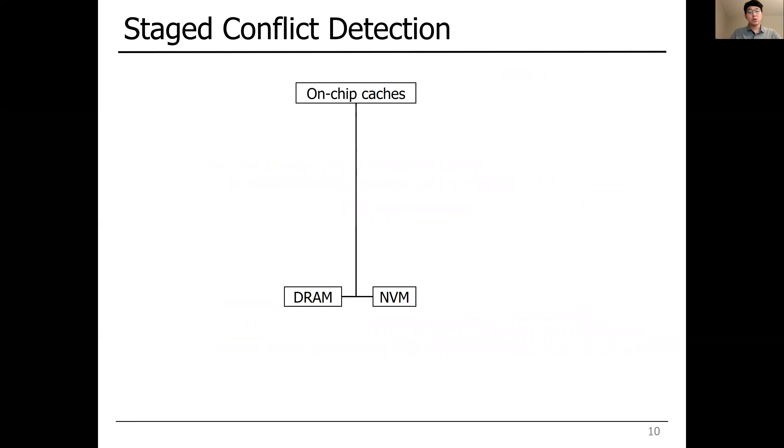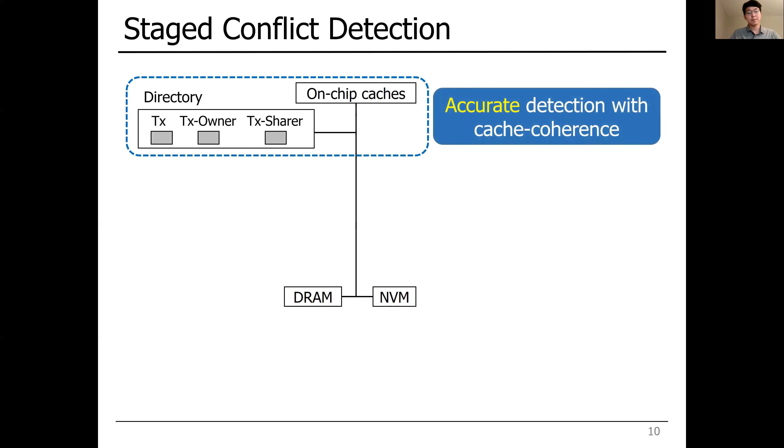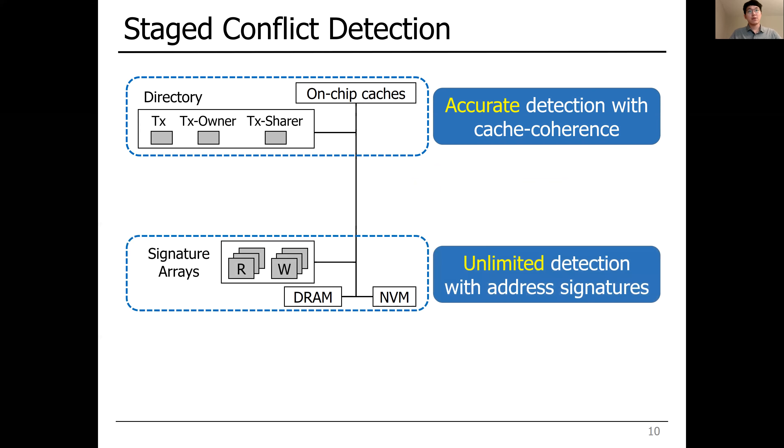Based on the previous observations, UHTM presents staged conflict detection that uses cache coherence protocol for data in on-chip caches by extending the directory-based coherence protocol.